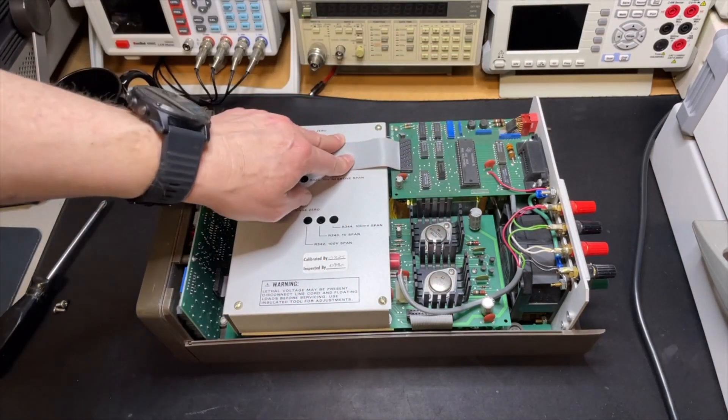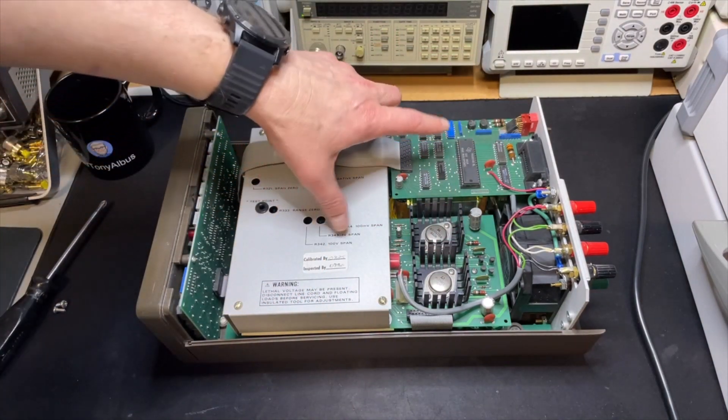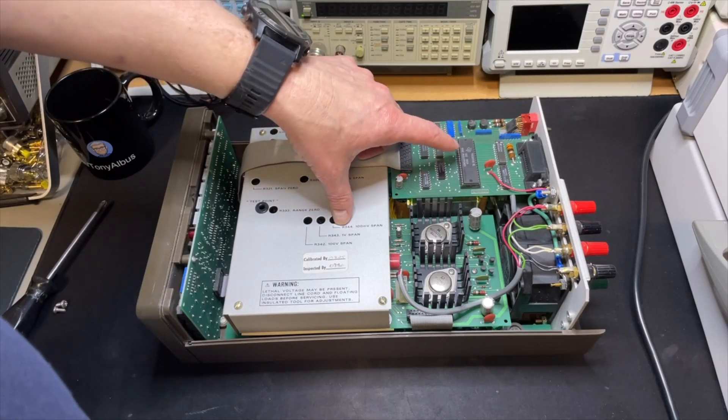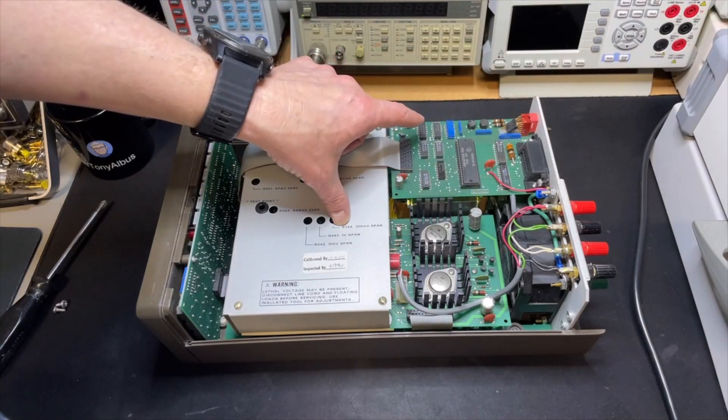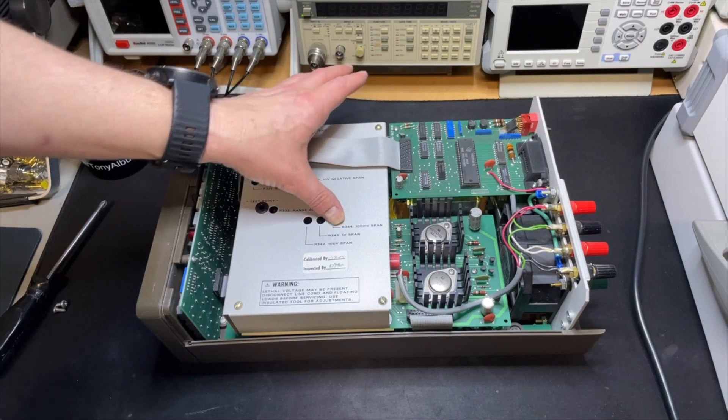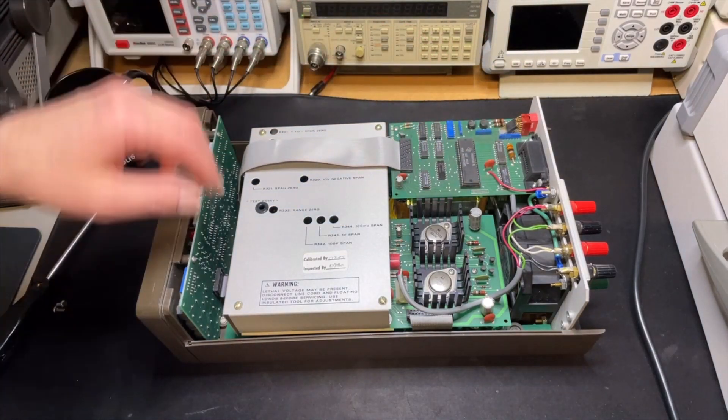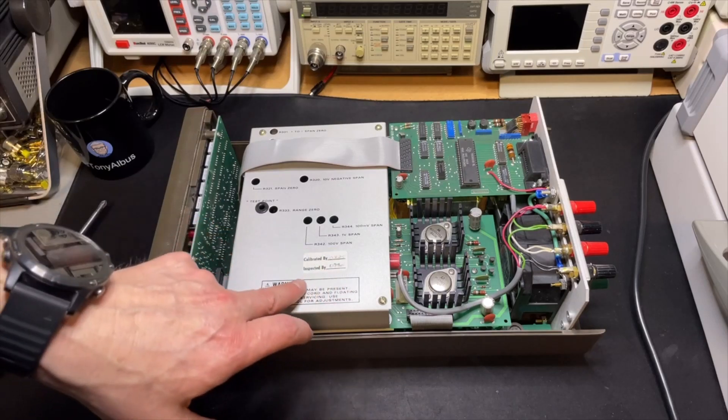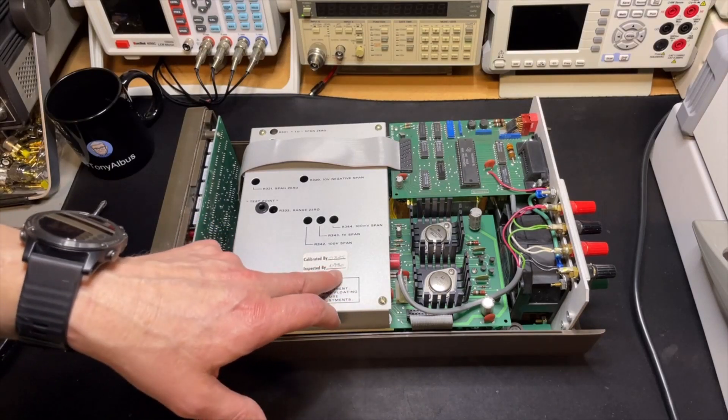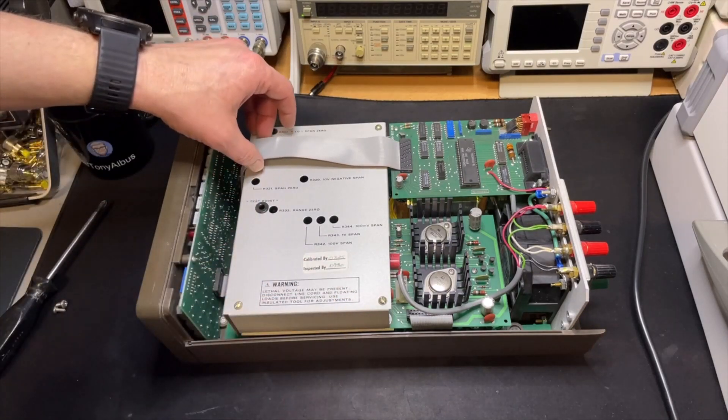This is the IEEE board. And I see some dates here. 84. 84. So, but this is an extra board that you can add later. We see here calibrated by, inspected by. But there is no date. It's kind of an engineer number.